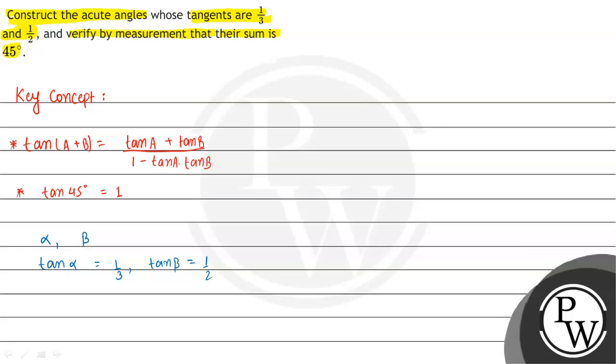We will use this formula: tan(alpha plus beta) equals tan alpha plus tan beta divided by 1 minus tan alpha into tan beta.